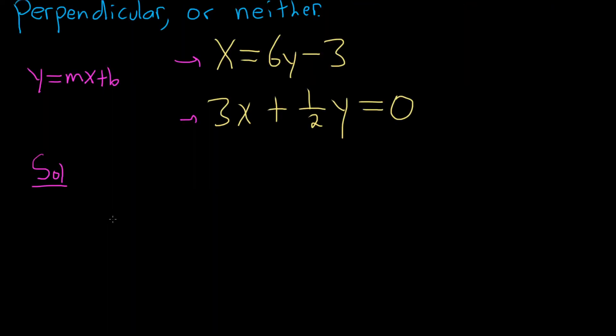Let's start with the one up top. I'm going to rewrite it: x equals 6y minus 3. We have to solve for y. A good first step would be to get rid of the 3, so we'll add 3 to both sides.